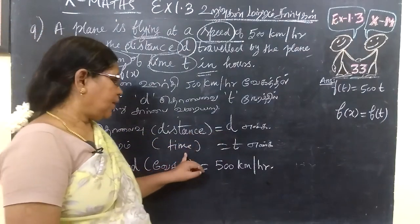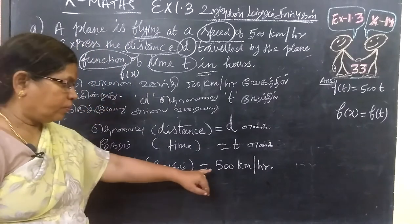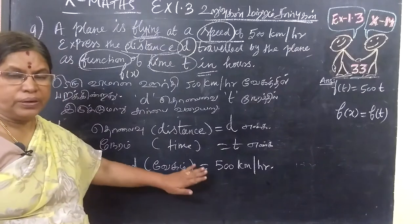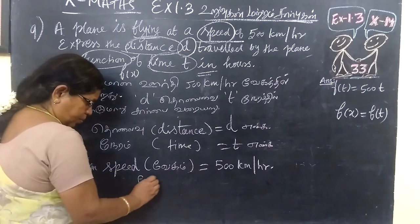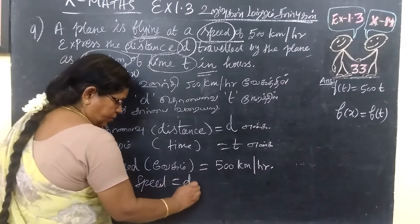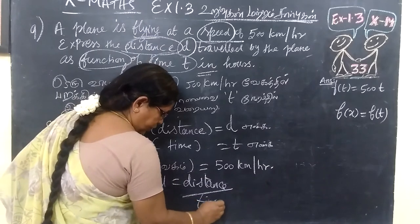So distance is d, time is t. What is given? Speed equal to 500 km, it is given in the question. We know this formula: speed equal to distance by time.